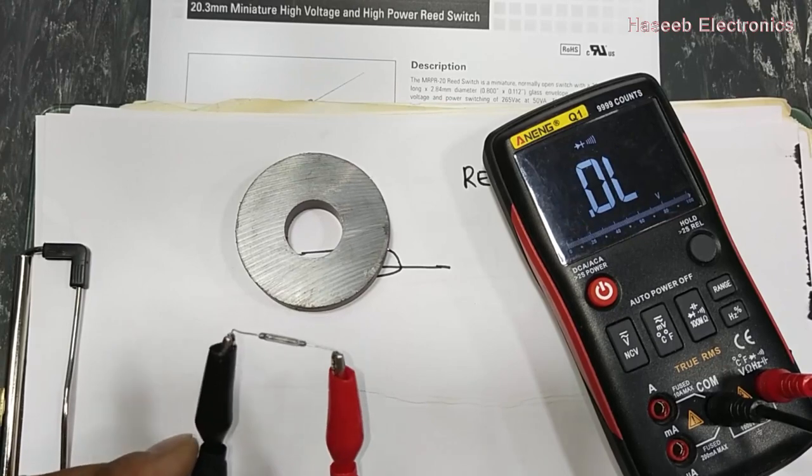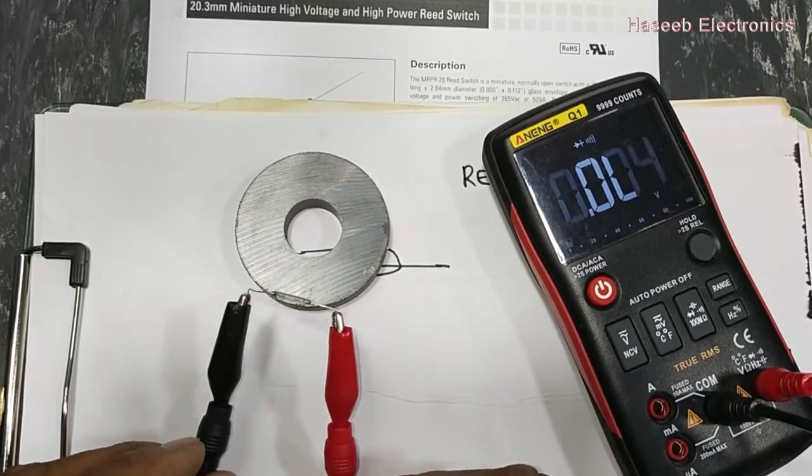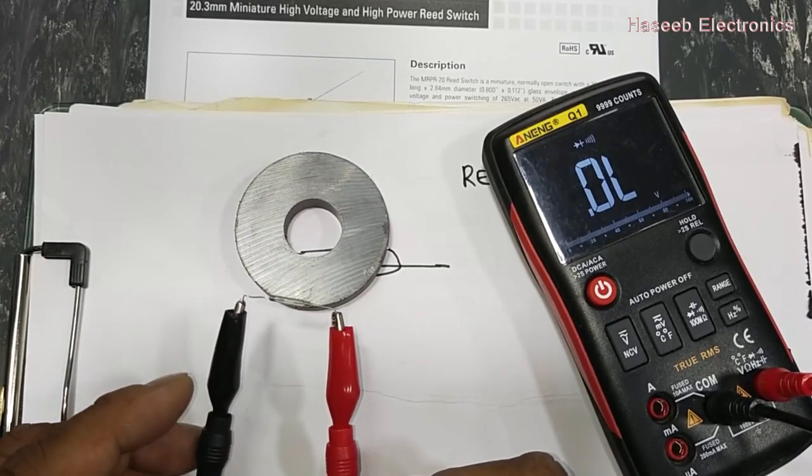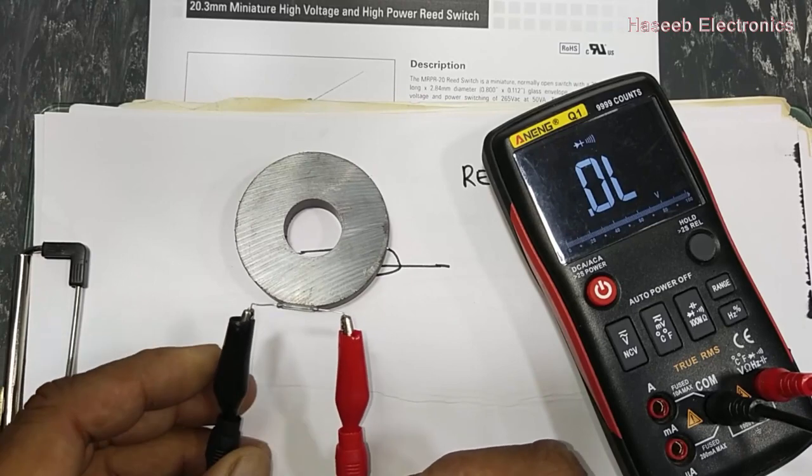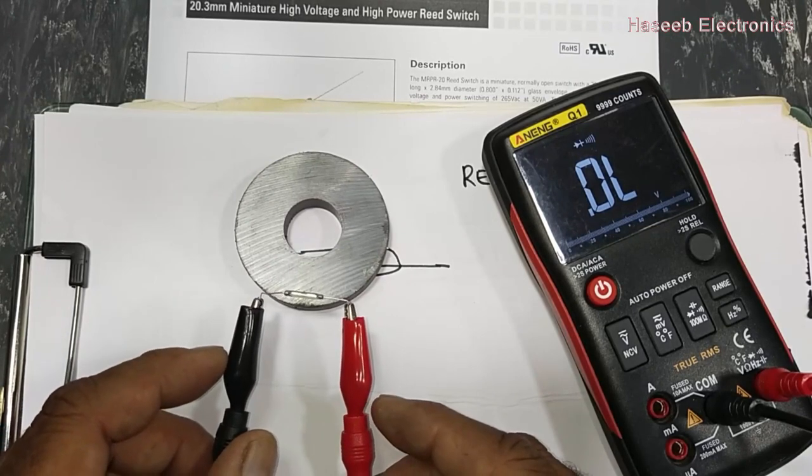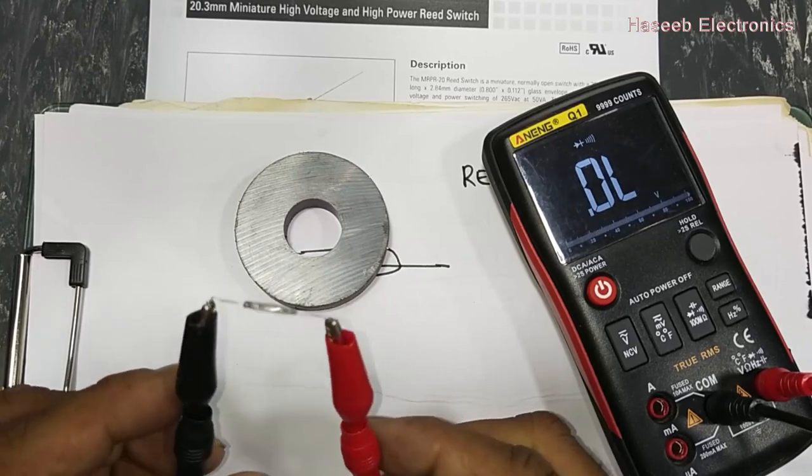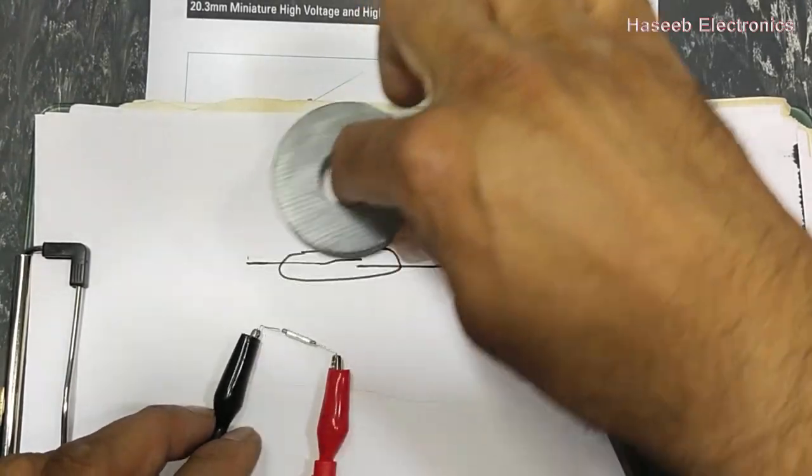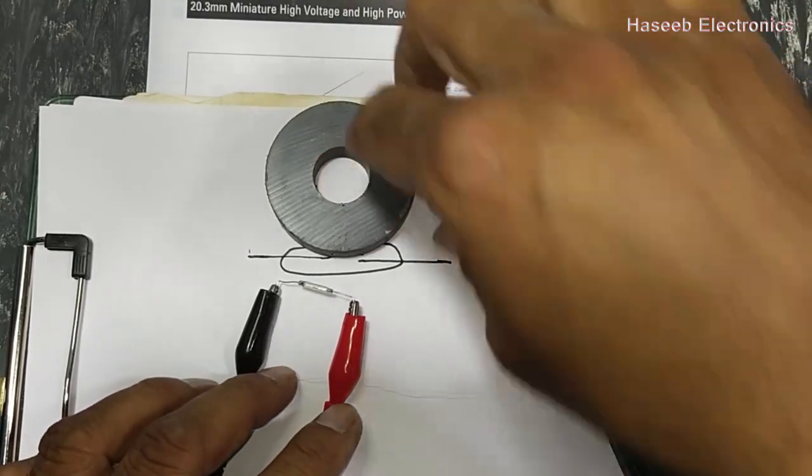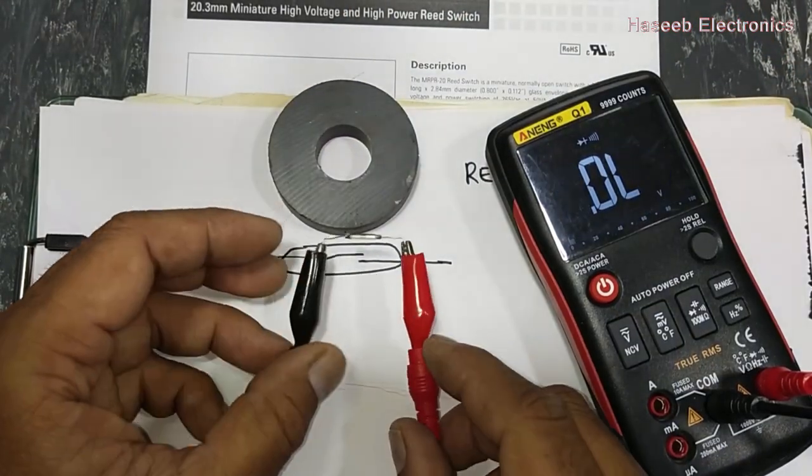It is used as a sensor to detect any mechanical shaft position, cylindrical position, and mechanical movement. When a magnet pole will reach to this switch, it will close its contacts.